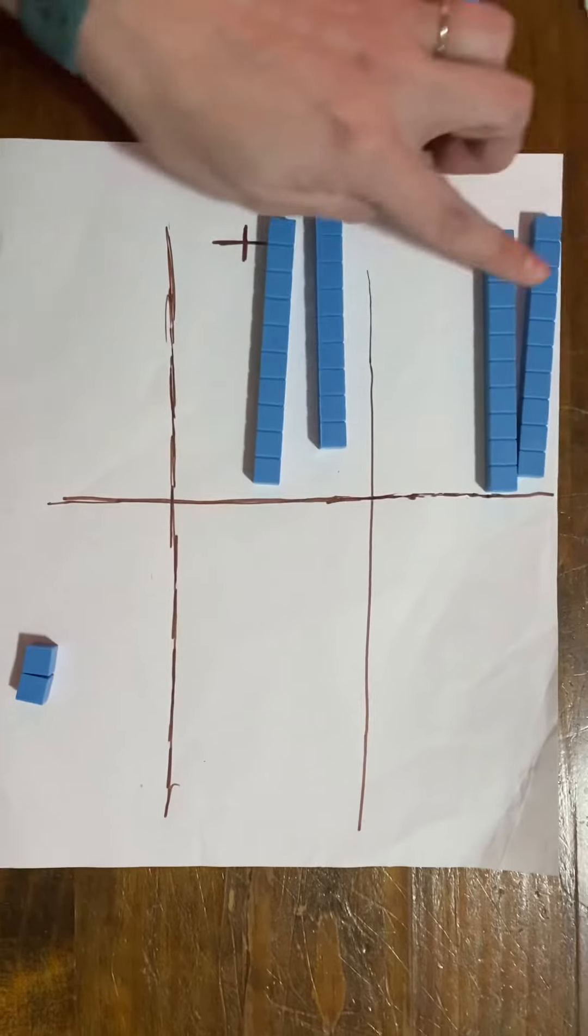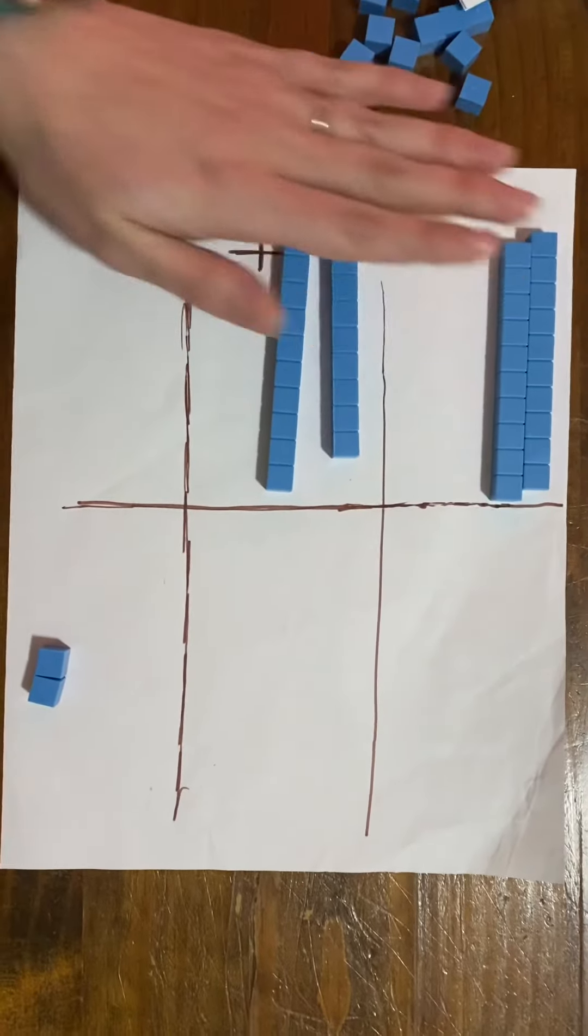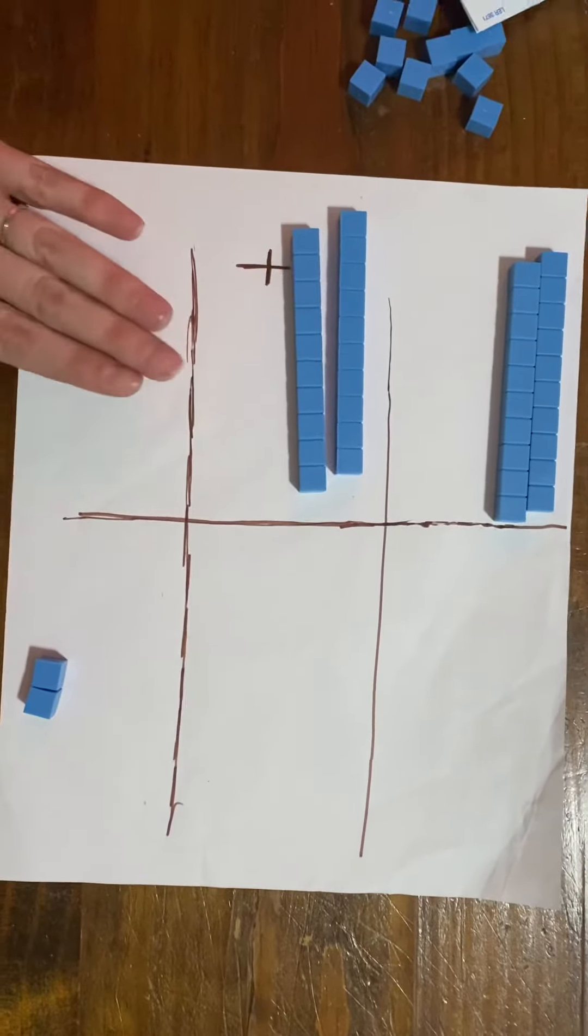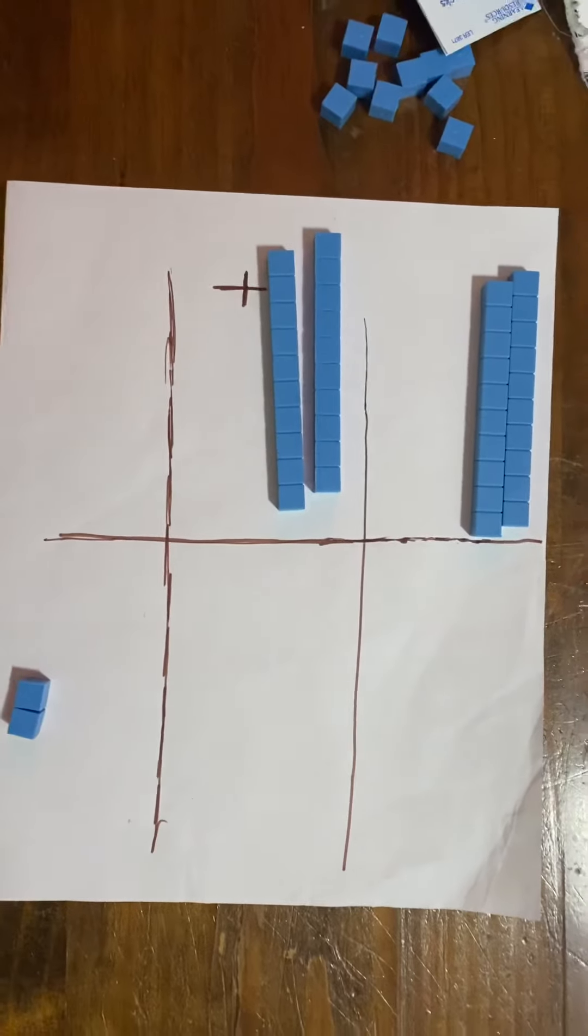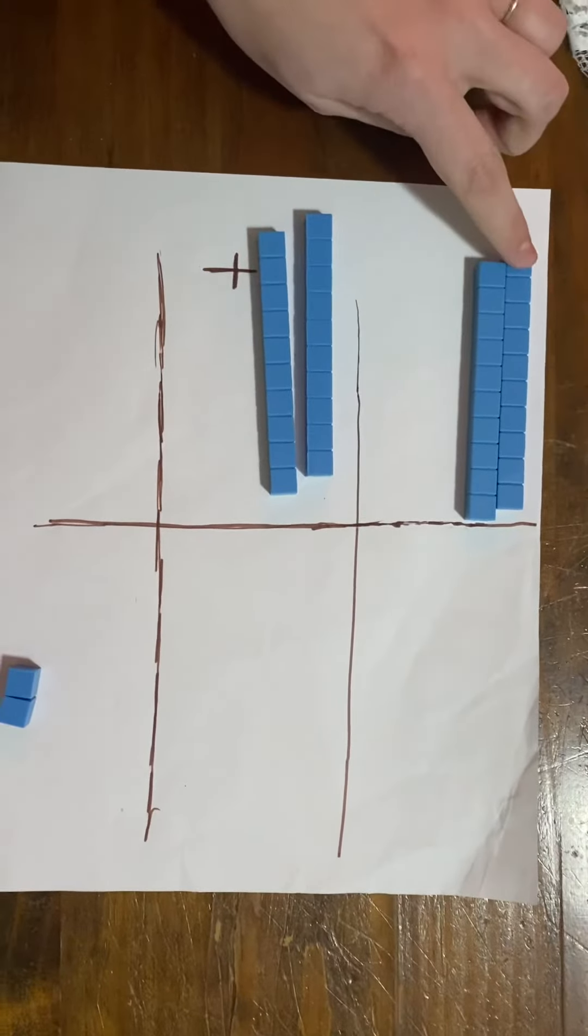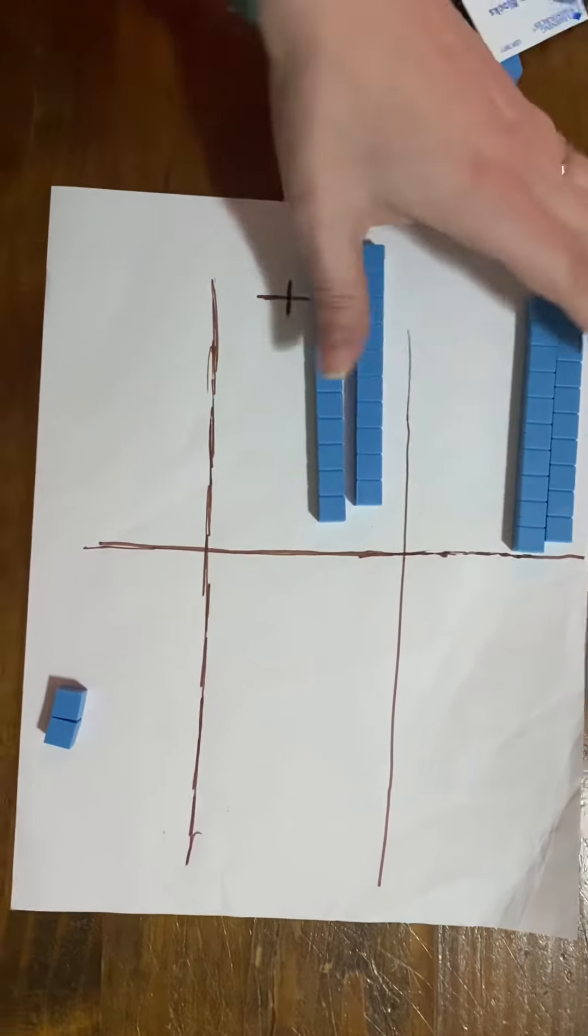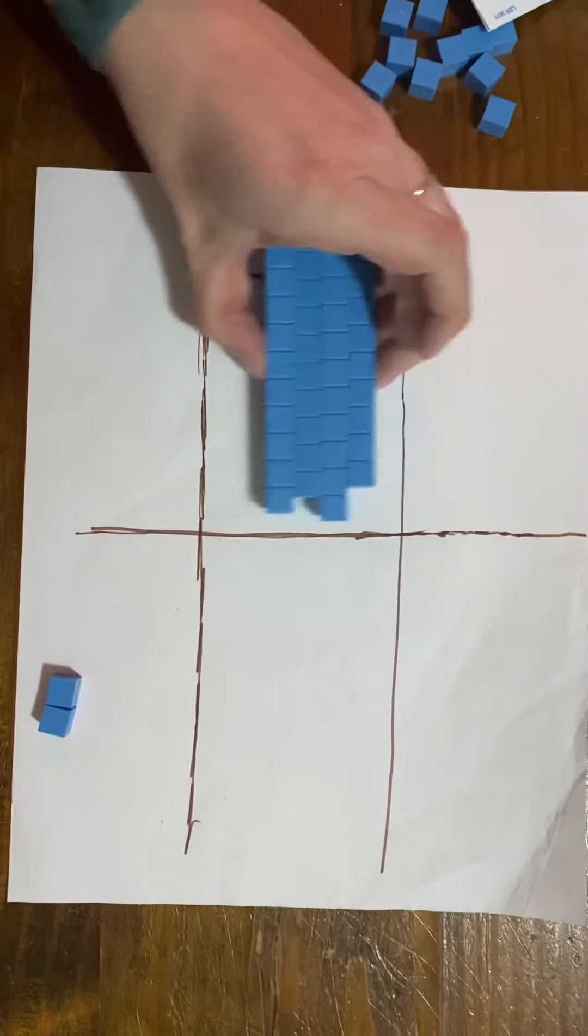And then we have the group of 10 still up here. We add it with the tens place because it is a group of 10. So now we have 1, 2, 3, 4—four groups of 10.